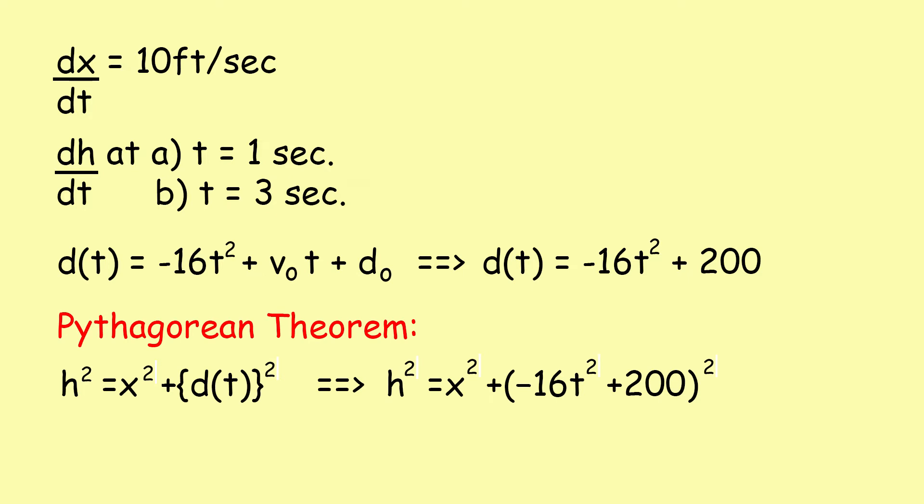Using the Pythagorean theorem, we get h squared equals x squared plus (minus 16t squared plus 200) squared.